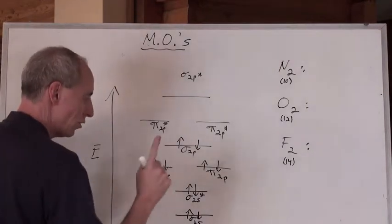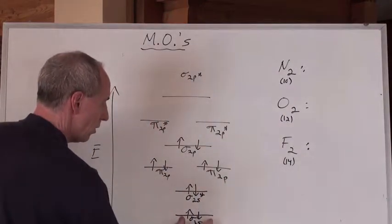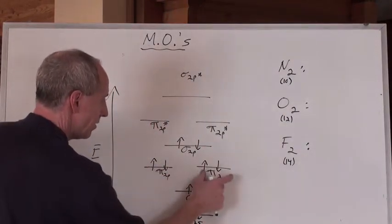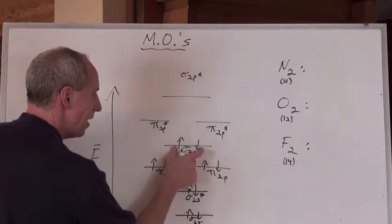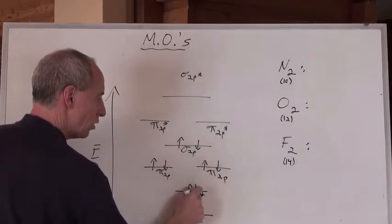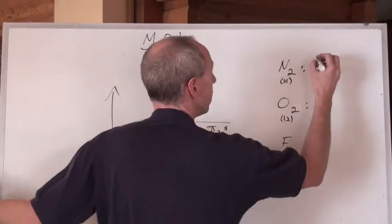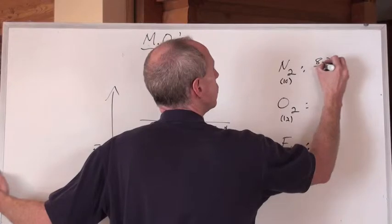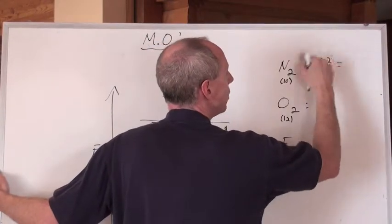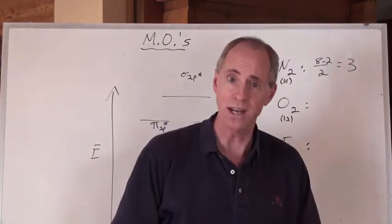So, what do we have in terms of what we would calculate for bond order? We've got 2 electrons in a bonding orbital, 4, 6, 8. 8 electrons here that are in bonding orbitals, and only 2 in anti-bonding orbitals. So, that are against bonding, right? So, that's going to be 8 minus 2 over 2, and that's going to leave a bond order here of 6 divided by 2 is 3. Nitrogen's bond order is 3.